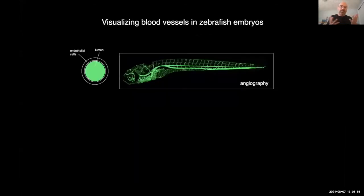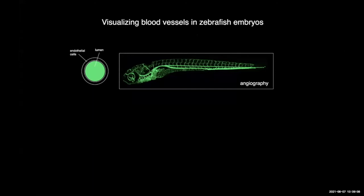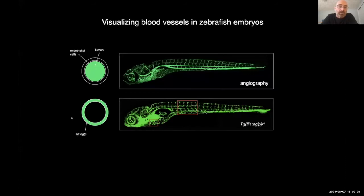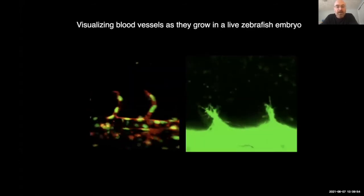Blood vessels themselves are transparent so we need fancier imaging approaches. Much as they do with humans, we can perform an angiography — injecting a substance directly into the bloodstream. Since the zebrafish is transparent we use a fluorescent substance that shows up as fluorescent green, and you can see very nicely all the blood vessels carrying circulation in a zebrafish embryo. We can also make transgenic zebrafish that carry a gene expressing green fluorescent protein in the cells lining the blood vessels — the same cell types we think are primarily affected in Sturge-Weber.